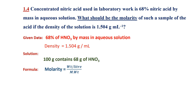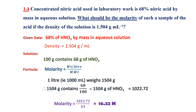In other words, 100 gram of aqueous solution of nitric acid contains 68 gram of nitric acid. The formula used is: molarity is equal to weight per liter divided by molecular weight. From the density, 1 ml weighs 1.504 gram, therefore 1000 ml, that is 1 liter, weighs 1504 gram.